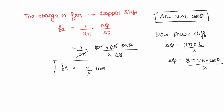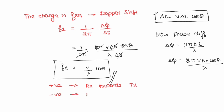Using this formula you can calculate only the shift in frequency. To find the received frequency, you either add or subtract Fd from the transmitted frequency. If the receiver is moving towards the transmitter, we add Fd. When the receiver is moving away from the transmitter — that is, the distance is increasing — you subtract Fd from the transmitted signal frequency.